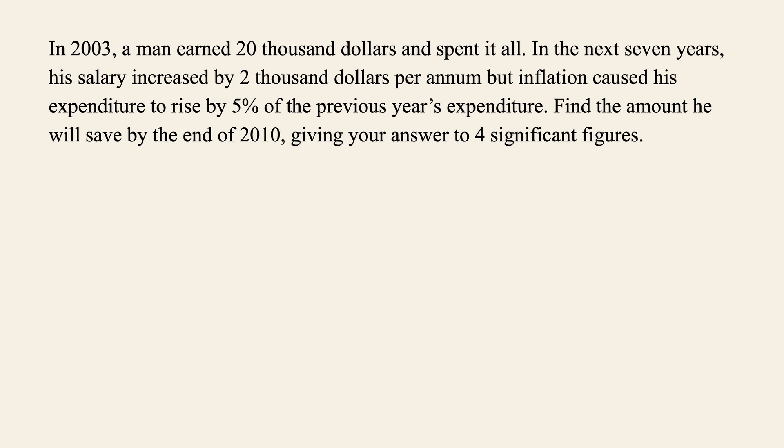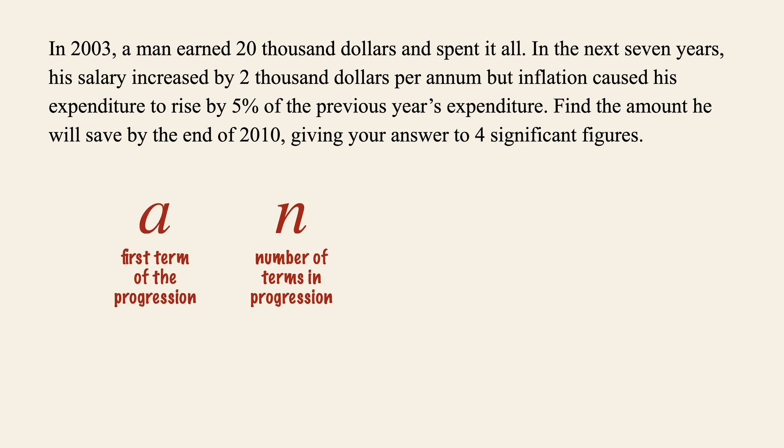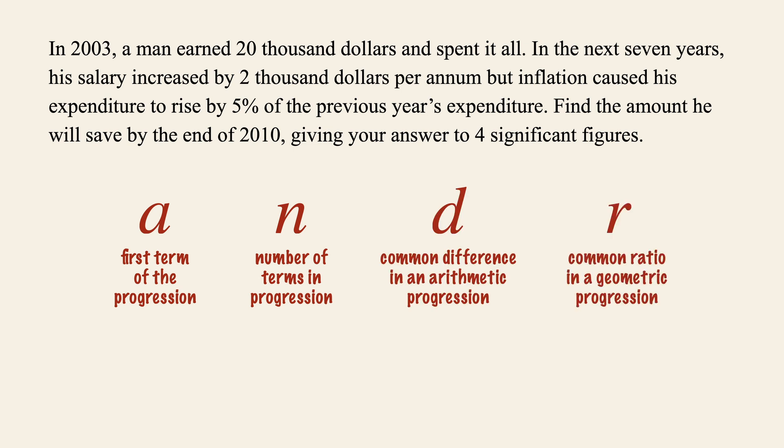Now if you are not quite sure where to start, it's always good to frame your mind to find out these terms from the question, where n is the number of terms in the progression, a is the first term, and d and r are the common difference and common ratio respectively.